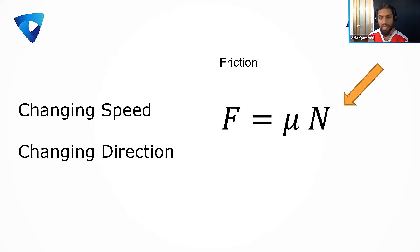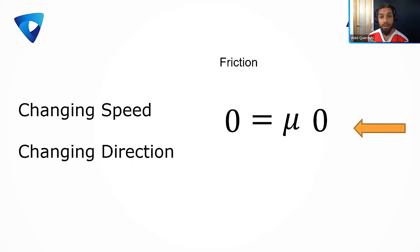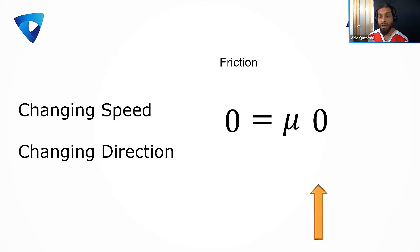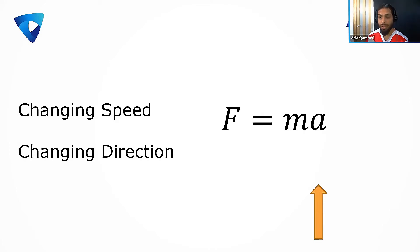Friction force equals a coefficient times the normal force, which usually comes from gravity. If you push at an angle, the normal force goes down, and so does friction. Push from the side and friction goes to zero — frictionless releases. This is why top-down transformations fail miserably. If you want frictionless releases, allow the people doing the work to plan their own release through self-organization. Bottom-up reduces friction to zero and accelerates delivery.